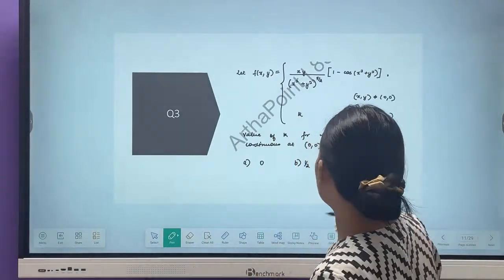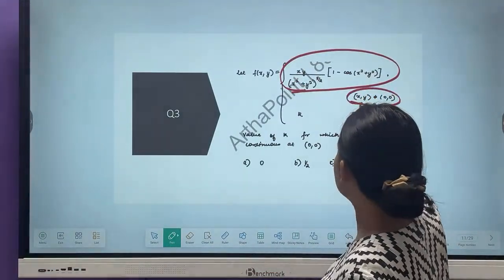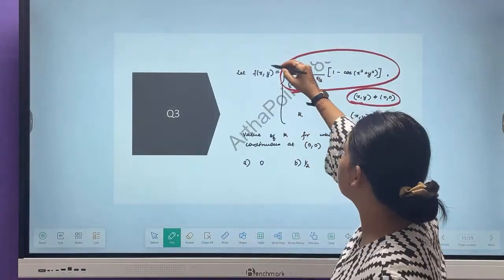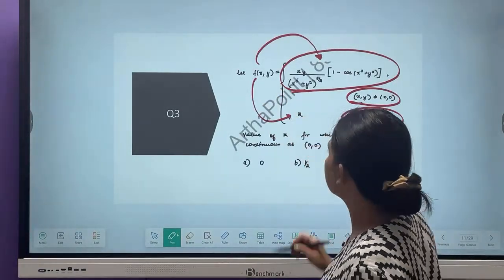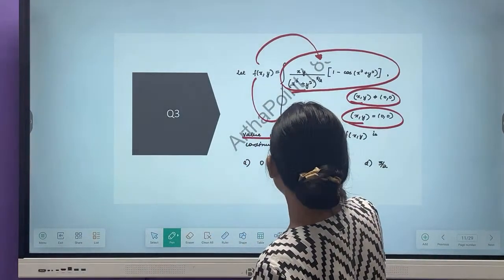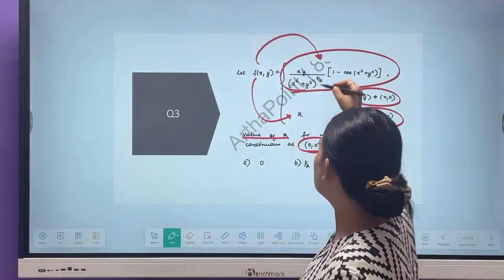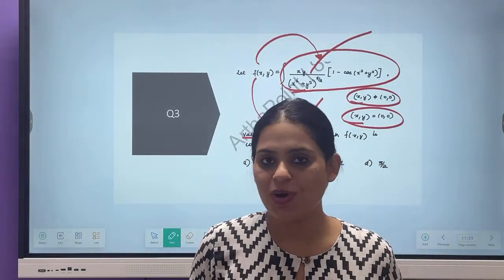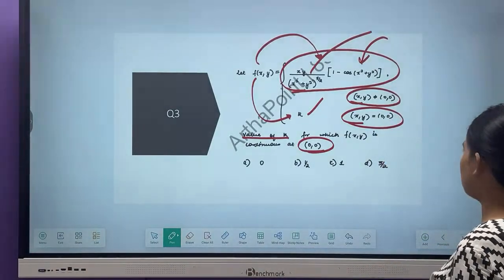We have come to the next question. You are given a function of this form when X, Y are not equal to 0. When X, Y are not 0, it takes this form, and when X, Y are 0, it takes the value K. The question is asking: find the value of K for which this function is continuous at (0,0). So for continuity, what will I want? That the value of the function here should be equal. So what will I do? I will put X equal to 0 and Y equal to 0 in this function.